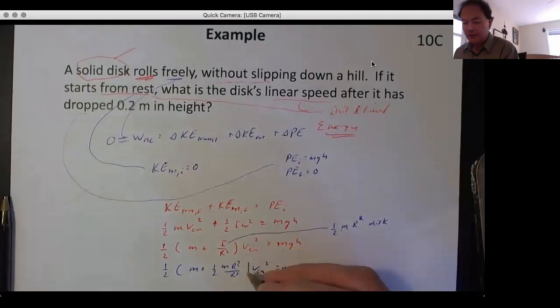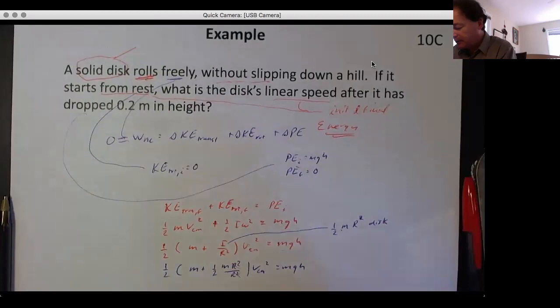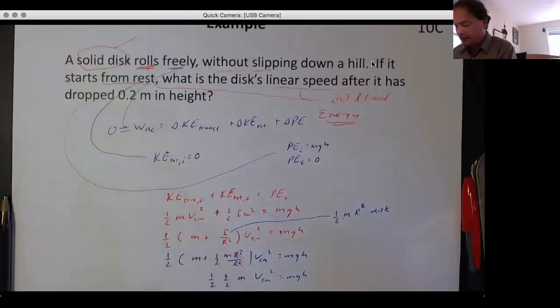So you have ½ times 3/2 m v_cm² is mgh. Okay, the m's cancel out on both sides.